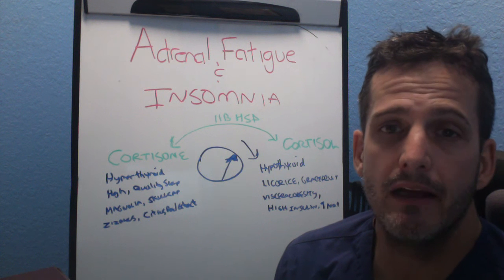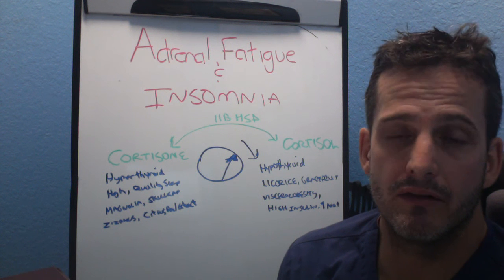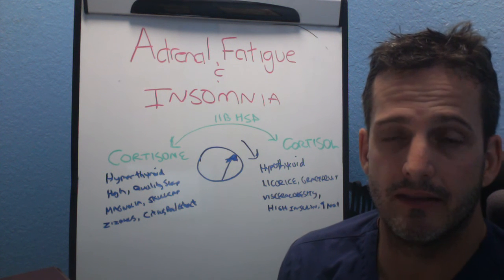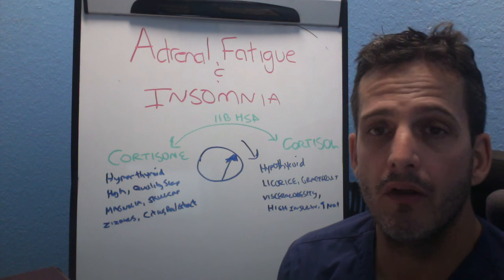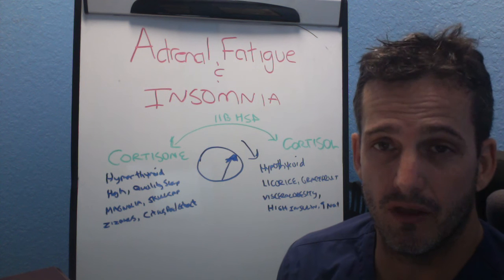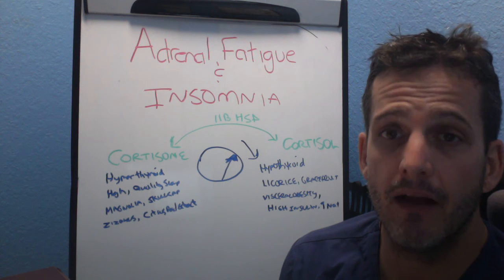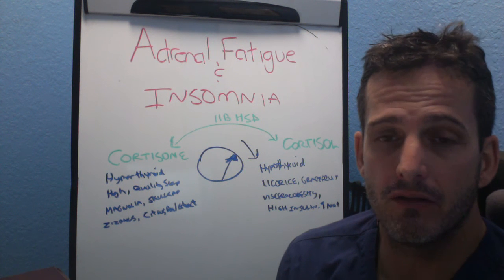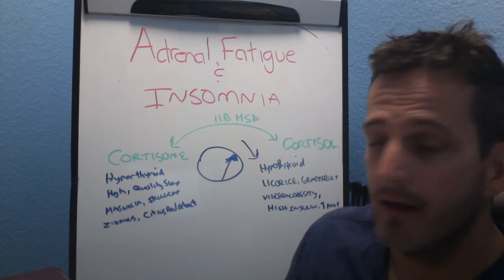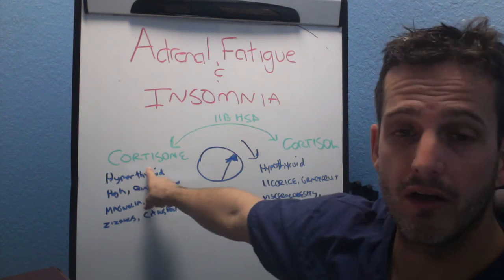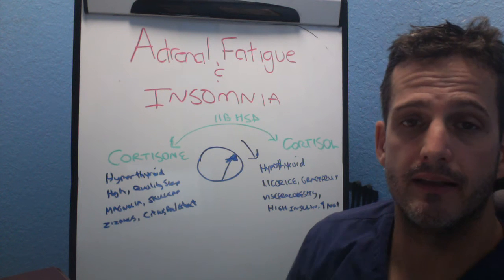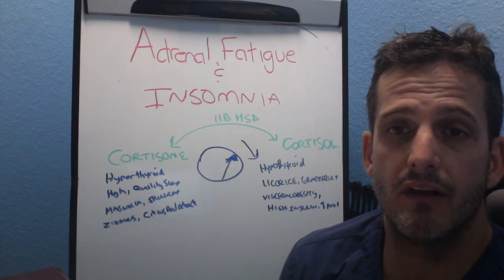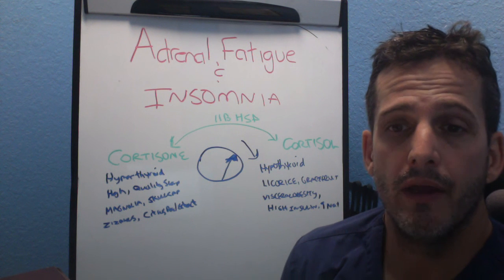The way I explain cortisol is kind of like the clutch of a standard vehicle — it helps you shift gears, from up to down and from down to up. Cortisone, by contrast, is the inactive form, so it actually doesn't work.